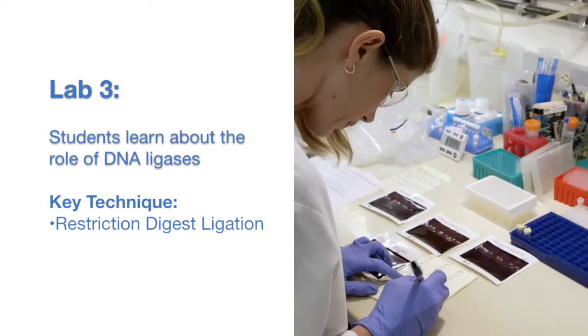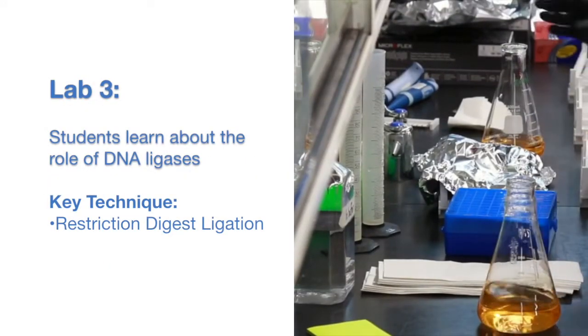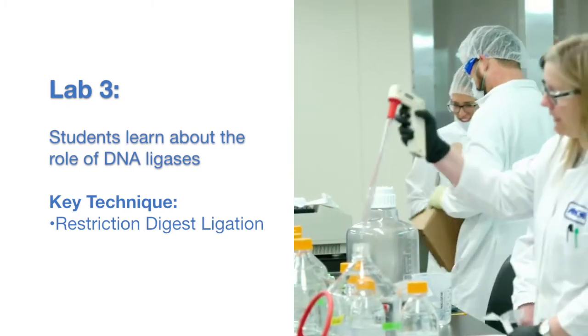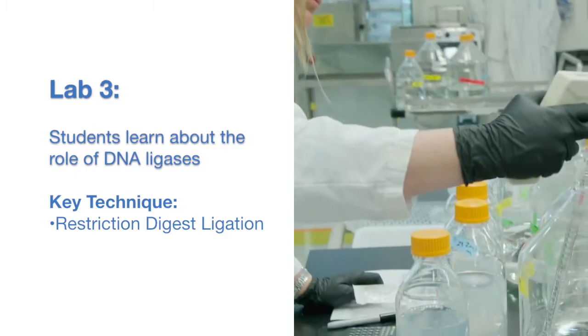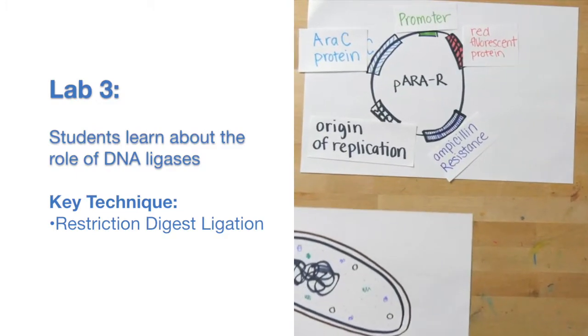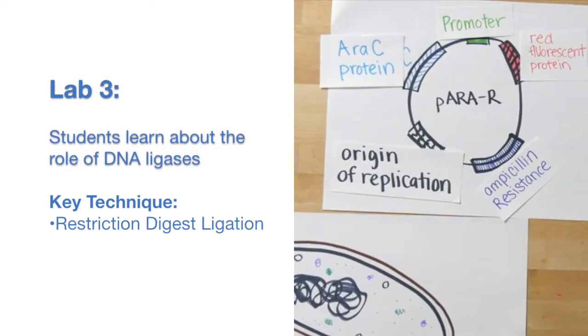In lab three, students learn about the important role of DNA ligases in biotechnology. In the lab, they ligate the restriction digest from lab two in order to produce the para-R plasmid that contains both the red fluorescent protein gene and the antibiotic resistance gene.